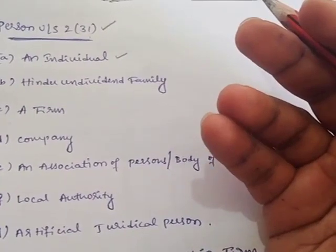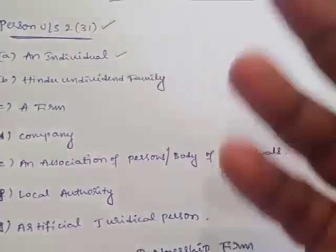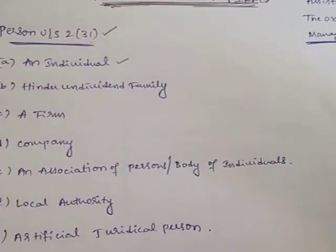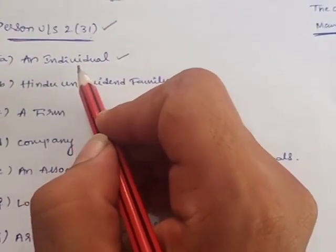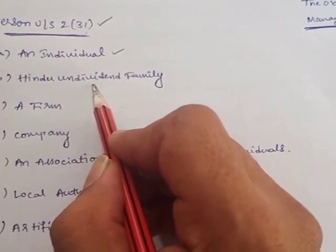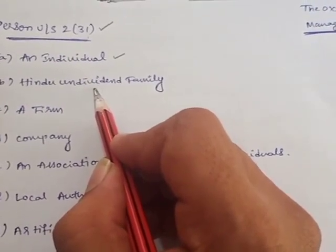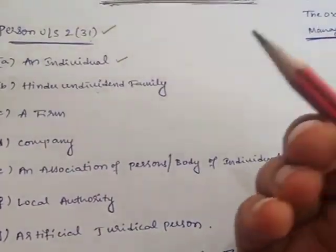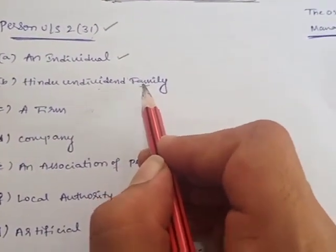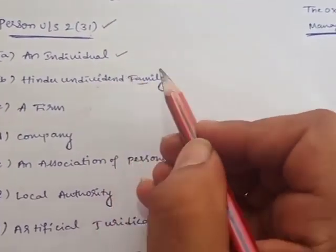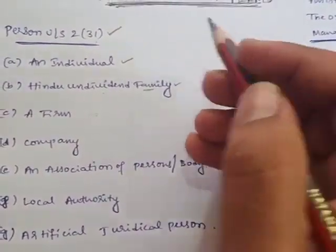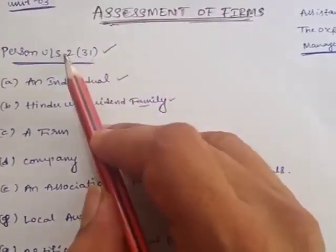There are 5 heads of income: income from salary, house property, capital gain, business and profession, and other sources. Out of these 5 heads, if you are earning income and it exceeds the exempted limit, you are eligible to pay tax as an individual. Next is Hindu Undivided Family — where two or more family members come together to start a business. The head of that family is called the karta. Such entities, if earning profit, are also eligible to pay tax.